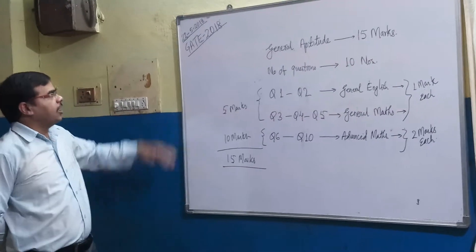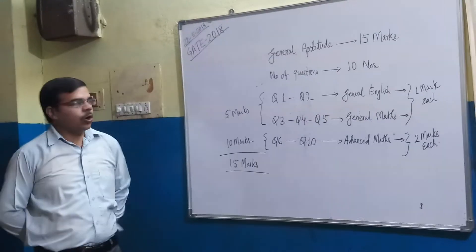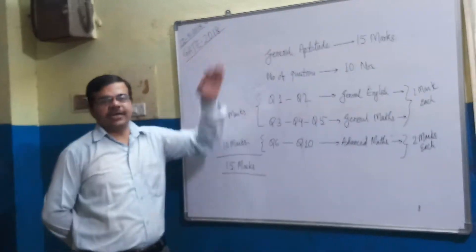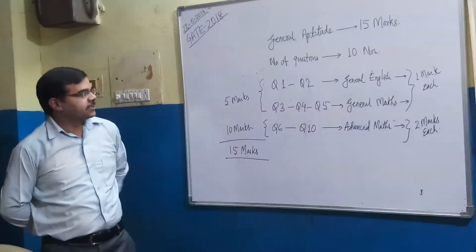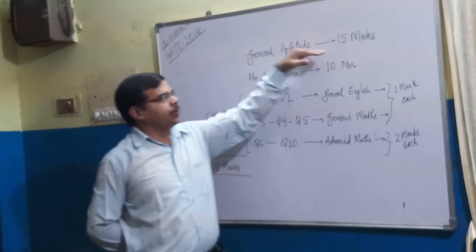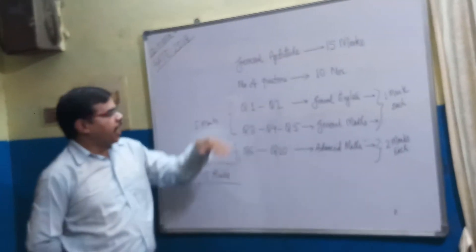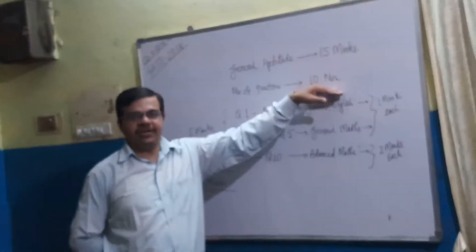Good morning. Today we are going to see the GATE syllabus. I am following the GATE 2018 syllabus. Here you are having General Aptitude, which is of 15 marks and the number of questions you are having is 10.